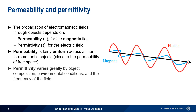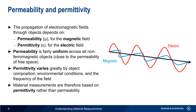On the other hand, permittivity does vary greatly by object composition, environmental conditions, and even the frequency of the field. So when we make material measurements, we want to measure permittivity, because permittivity exhibits the most significant changes based on the composition of the material that we're testing.